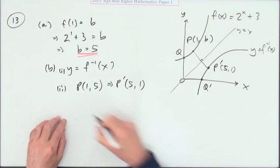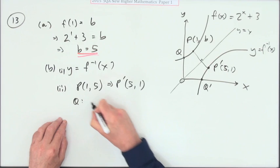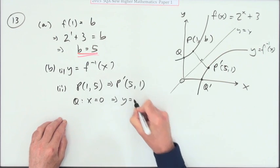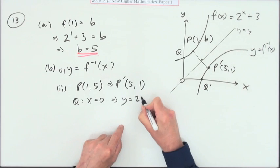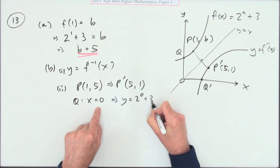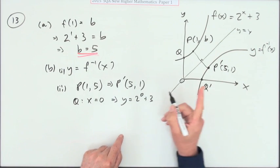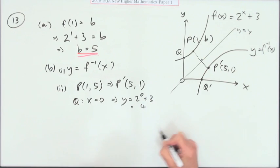Now q, I don't know straight away, but for q, x is 0, which means y will be, just follow the expression, 2 to the power 0 plus 3, which is 1. Number 2 to the power 0 is 1, that's 1 plus 3, which is 4.